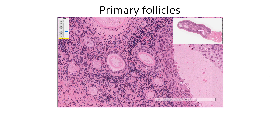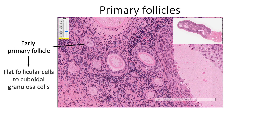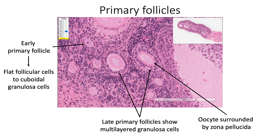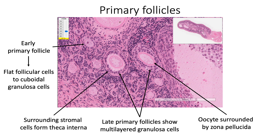In each menstrual cycle, 15 to 20 primordial follicles progress to become primary follicles. In early primary follicles, the flattened follicular cells transform into cuboidal granulosa cells. In late primary follicles, the granulosa cells proliferate to form a multilayered granulosa cell layer. The primary oocyte develops an eosinophilic hyaline coat called the zona pellucida, made up of glycoproteins, and the surrounding stroma differentiates to form the theca interna.